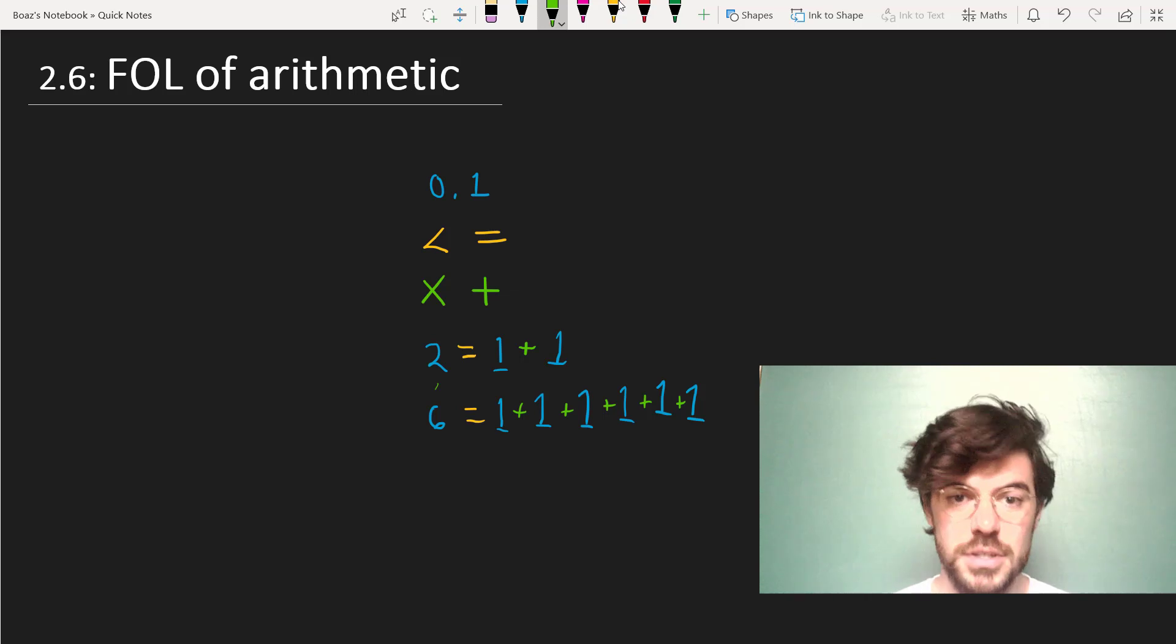For instance, consider the properties of the even numbers that they're divisible by 2. We can't observe every single even number and see whether it's divisible by 2. No matter what even number we get by repeated applications of a function, that number will be divisible by 2.